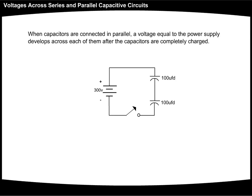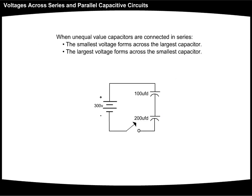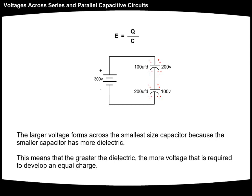When capacitors are connected in parallel, a voltage equal to the power supply develops across each of them after the capacitors are completely charged. When equal value capacitors are connected in series, the same voltage is dropped across each one. When unequal value capacitors are connected in series, the smallest voltage forms across the largest capacitor, and the largest voltage forms across the smallest capacitor. The larger voltage forms across the smallest capacitor because the smaller capacitor has more dielectric, meaning the greater the dielectric, the more voltage required to develop an equal charge.